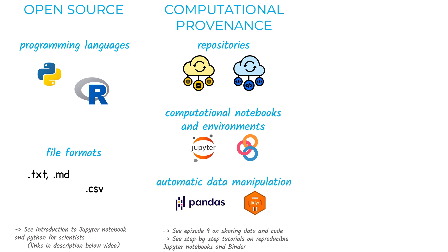Finally, it is important to avoid manual manipulation of data, for example when using tables. Manually correcting data in a table, cancelling rows, or merging columns is not ideal, because we might accidentally lose or compromise some values without being able to recover the original version. To avoid that, we can automatically read the original data with some code, and then tidy the data using packages such as Pandas in Python or TidyR in R.